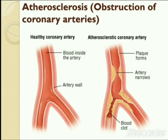Angina pectoris is of three types: stable, unstable, and microvascular angina pectoris. Stable angina is also known as effort angina and is one of the more common forms. This type of angina is present when the patient is exerting himself — such as running, brisk walking, climbing stairs, or exercising.